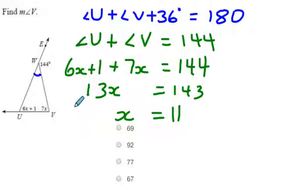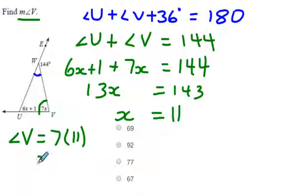Now 11 is not what my answer is. I want to find out what the measure of angle V is. So that's this angle right here. So to find out what angle V equals, it would be 7x, and x is 11. That would be 77 in this case.